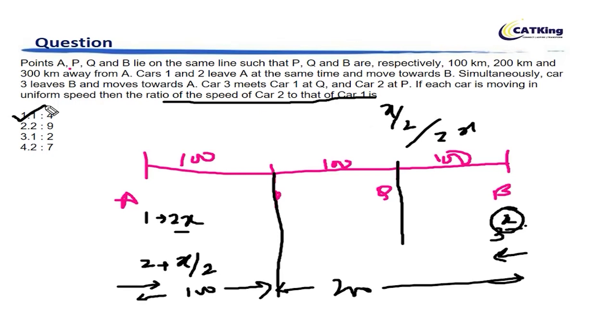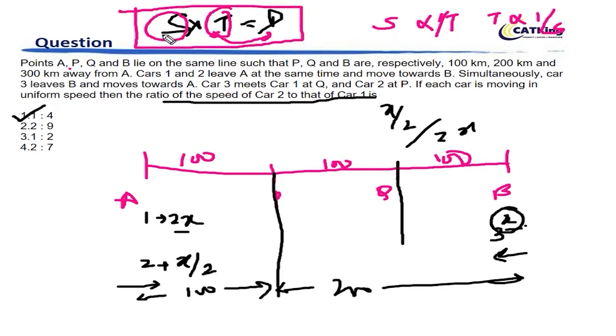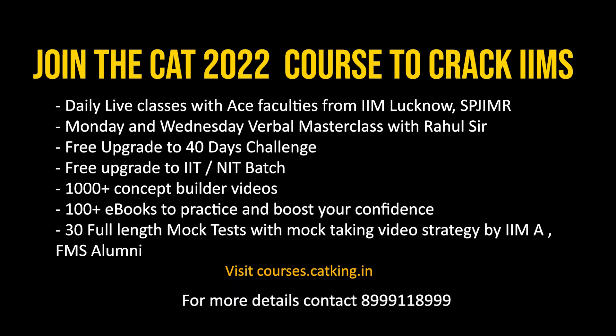What's the concept here? The concept is very simple. Speed into time is equal to distance. So there are two concepts here: one is direct proportionality and the other is inverse proportionality. If time is a constant, speed is directly proportional to distance. If speed is a constant, time is directly proportional to distance. If distance is a constant, then speed is inversely proportional to time and time is also inversely proportional to speed. So there are two concepts: one is direct proportionality when either of S or T is a constant, and there is inverse proportionality when distance is a constant. I hope you are clear with this concept.